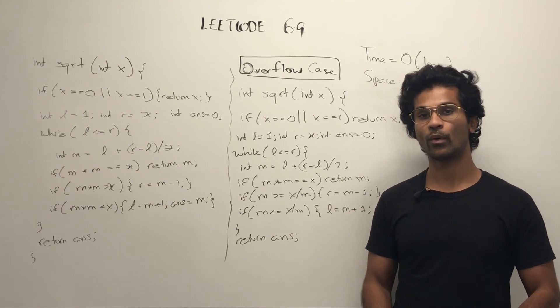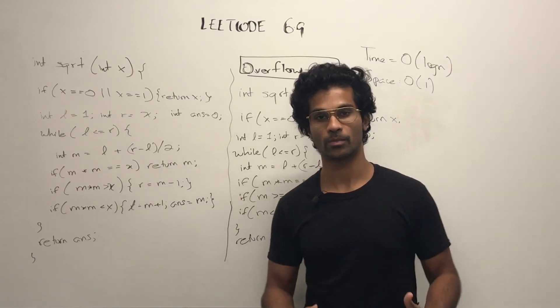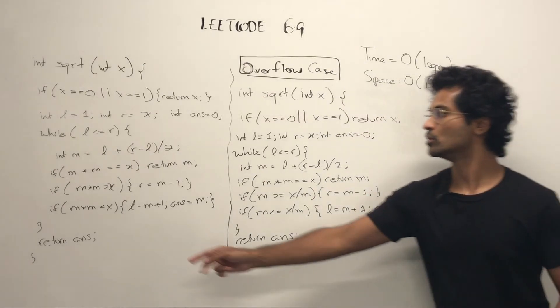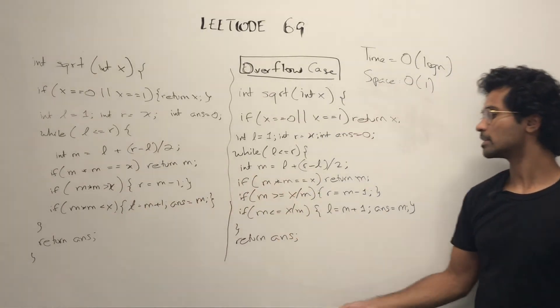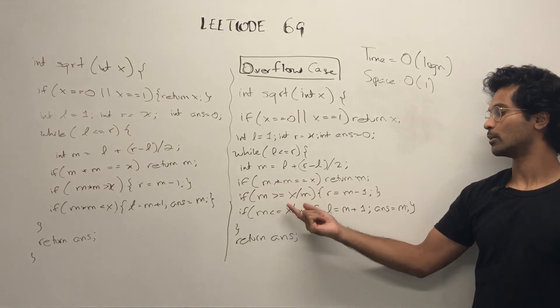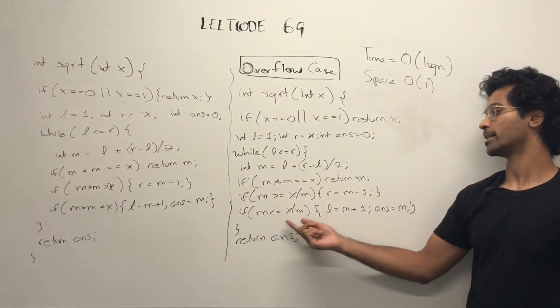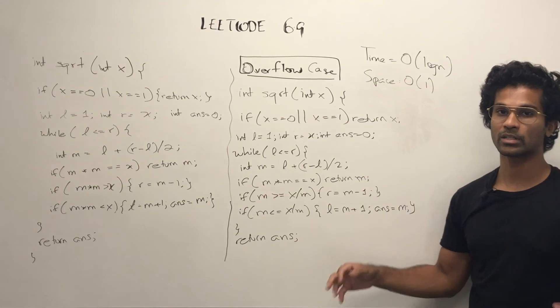So if we want to take care of the overflow or out of bounds or really large number cases, what we actually have to do is tweak this a little bit to say m is greater than or equal to x by m and m is less than or equal to x by m. Everything else pretty much stays the same.